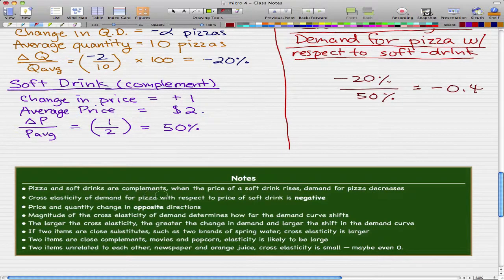Now the cross elasticity of demand for pizza with respect to the price of soft drinks is negative, and remember that is because it's a complement. So you've got to remember that for complements the cross elasticity is negative and for substitutes the cross elasticity is positive. So the price and quantity changes in opposite directions where in the last video because they were substitutes they change in the same direction. And the magnitude of the cross elasticity of demand determines how far the demand curve shifts.